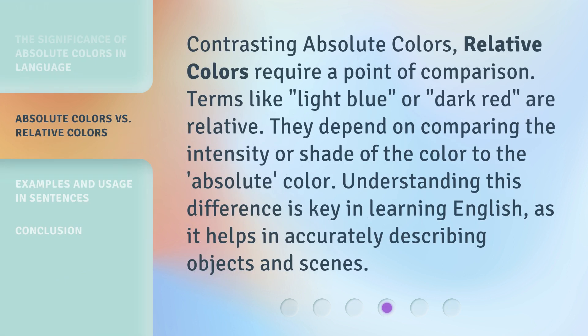Contrasting absolute colors, relative colors require a point of comparison. Terms like 'light blue' or 'dark red' are relative — they depend on comparing the intensity or shade of the color to the absolute color. Understanding this difference is key in learning English, as it helps in accurately describing objects and scenes.